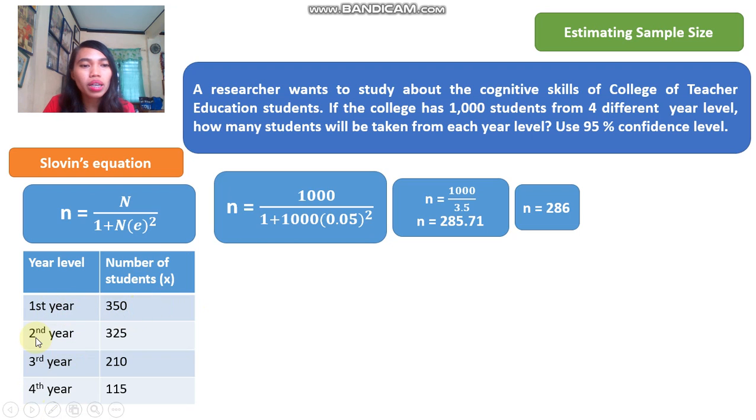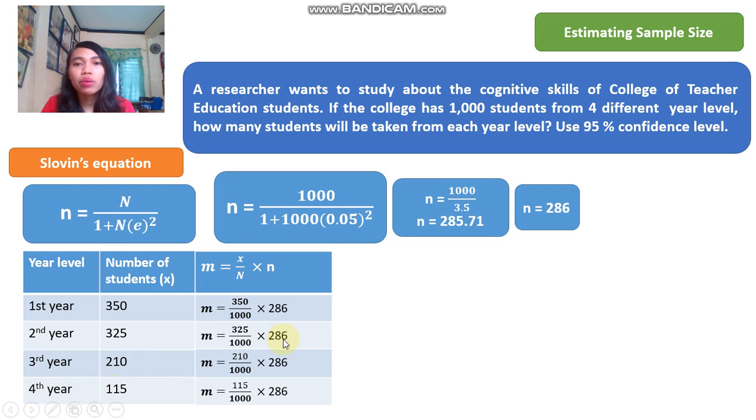so you have first year, 350, second year, 325, third year, 210, fourth year, 115. We can use the concept of ratio and proportion, the proportion itself.